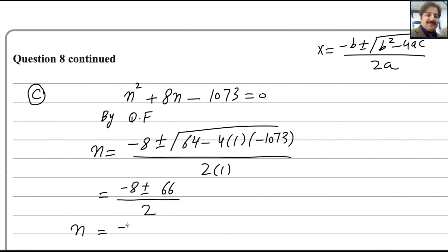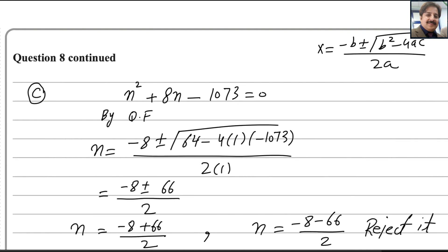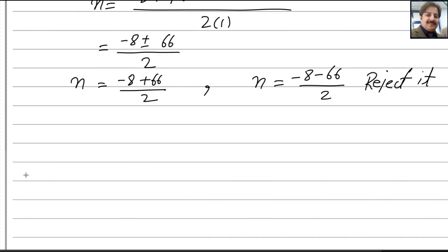Minus 8 plus minus. If you solve this one, we get the answer 66. Divide by 2. And here, we will get two answers. Plus 66 divided by 2. And other answer will be n equals to minus 8 minus 66 divided by 2. We will reject it because number of rows cannot be negative. Therefore, from here, you can get the one answer for n. So it will be 58. 58 divided by 2 is 29. So there will be 29 rows. In that theater. For C, first part is done.